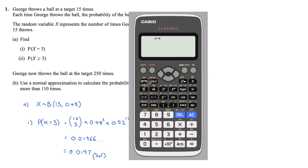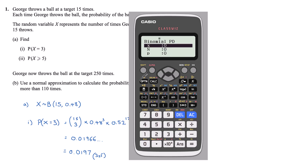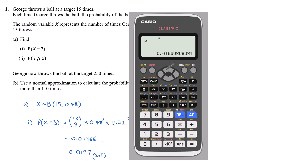We can also find this value directly on our calculator. Go to Menu 7 Statistics and look at Binomial PD, which is option 4. Enter the variables: x equals 3, n equals 15 throws, and the probability of hitting is 0.48. Hit equals and we get 0.019668, which rounds to 0.0197 to three significant figures.